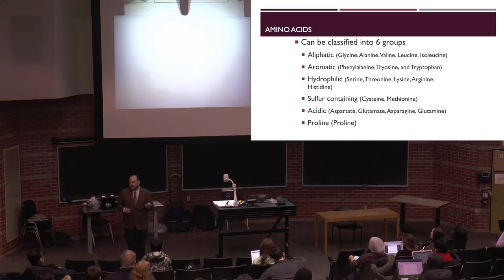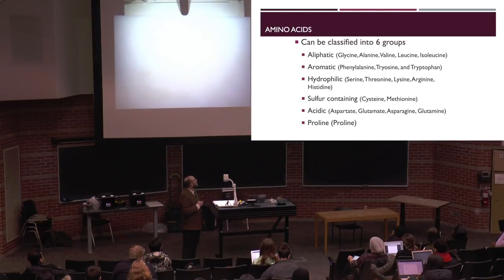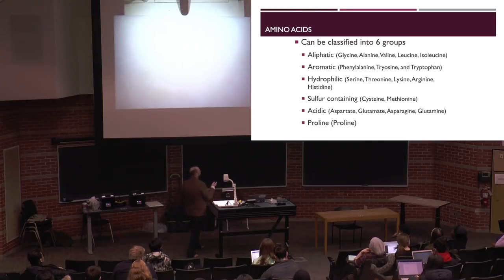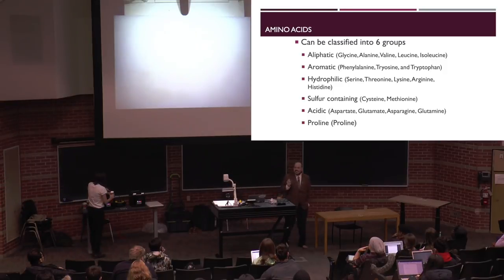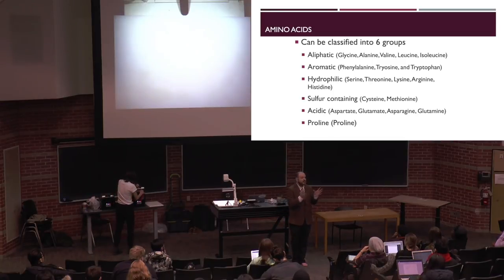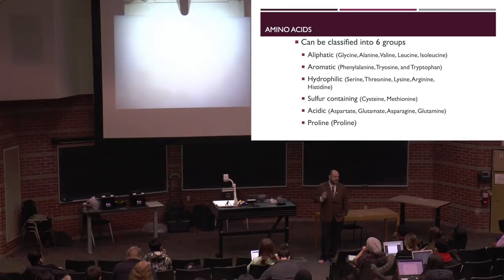The aromatic groups — phenylalanine, tyrosine, and tryptophan — also don't like to be exposed to the aqueous phase. The hydrophilic amino acids also contain the sulfur-containing amino acids and tend to reside on the outside of proteins. These are our water-loving amino acids. The acidic amino acids are very important in food science because we can change their charge with pH, which changes solubility and can cause gelation through protonation.